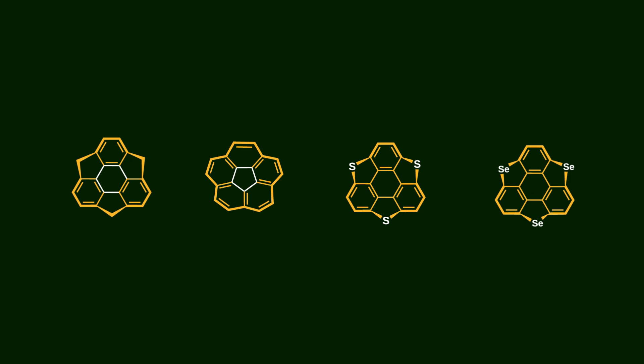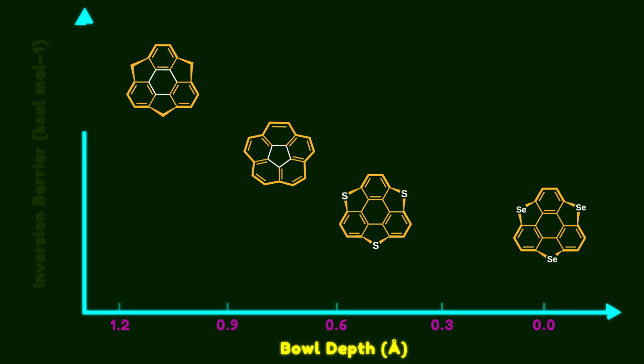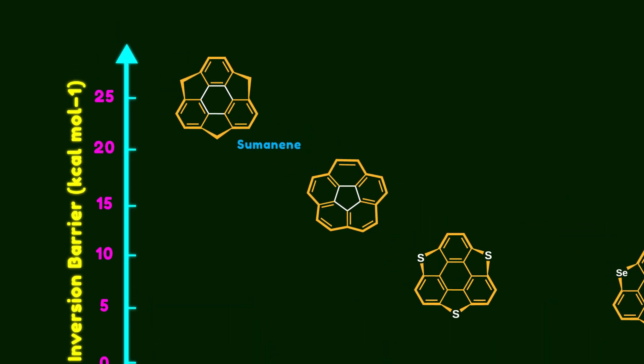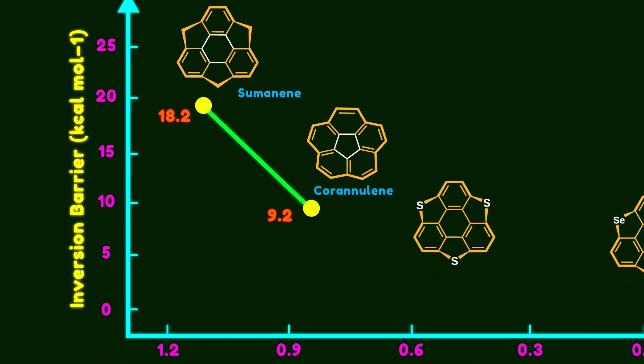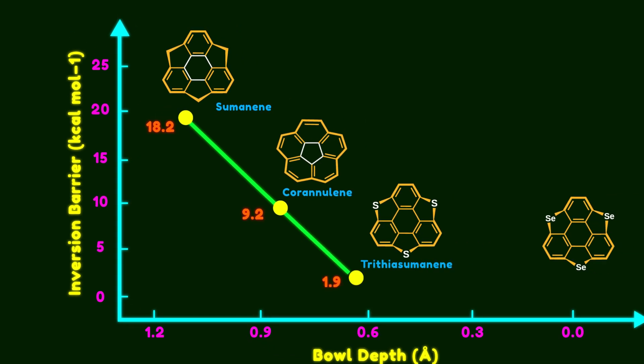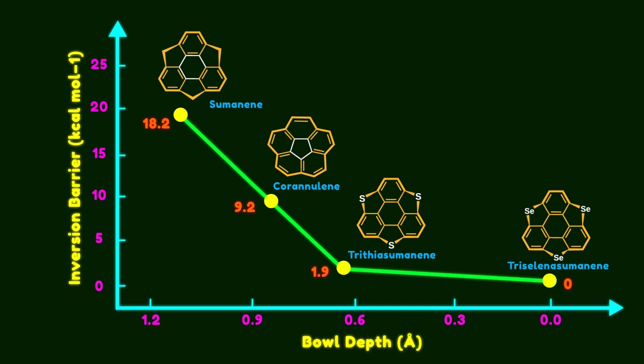Let's take a closer look. Here we can see four ball-shaped molecules with different depths, and we're going to compare their inversion barriers relative to bowl depths. Sumanene has the deepest bowl among them with an inversion barrier of 18.2. Corannulene is another member of this family, where five benzene rings are fused to a central five-membered ring. Its inversion barrier is 9.2 which is almost half that of sumanene. Trithiasumanene shows a dramatic drop in the inversion barrier, reaching just 1.9. And if you replace the sulfur atoms with selenium, the energy barrier becomes zero, because the molecule is planar.